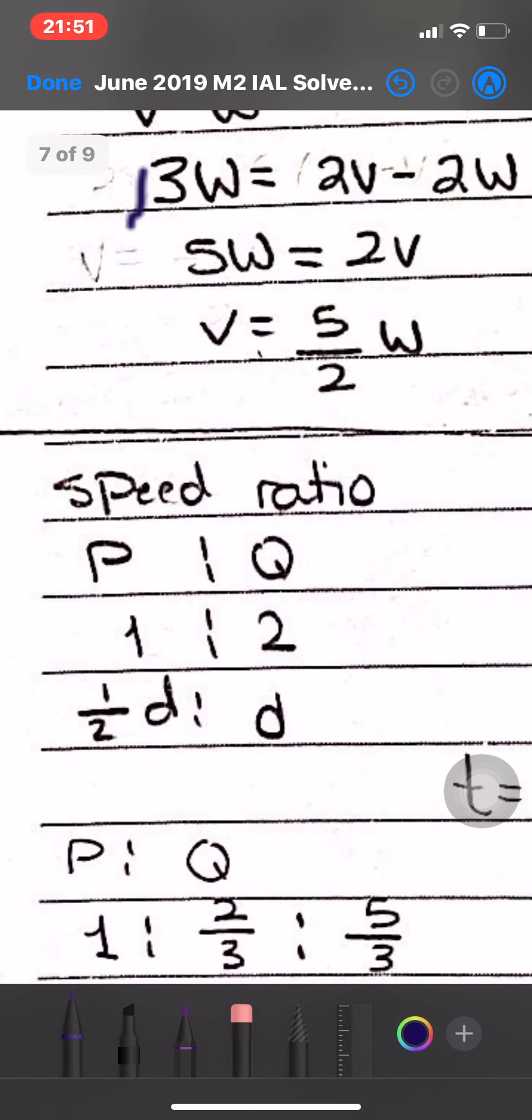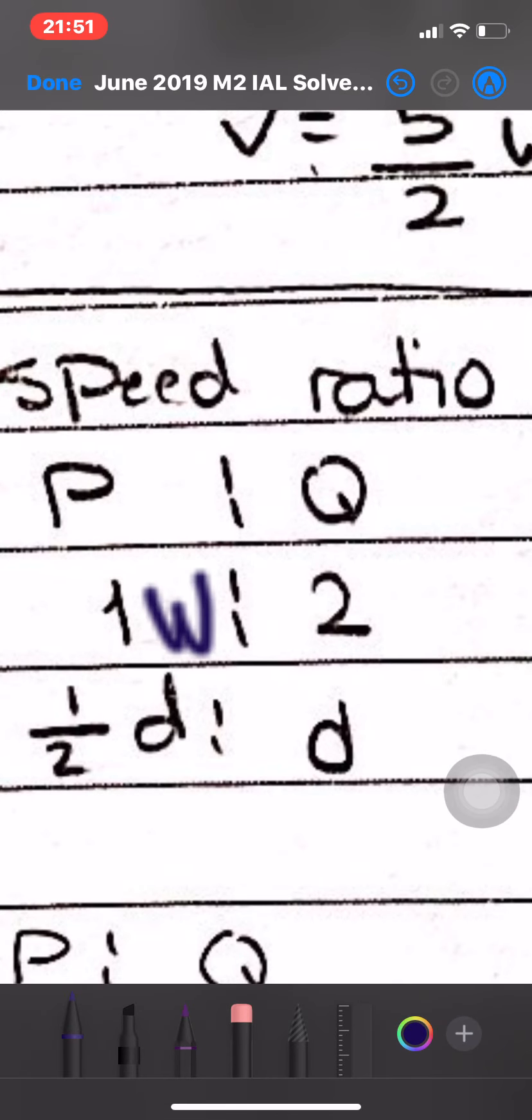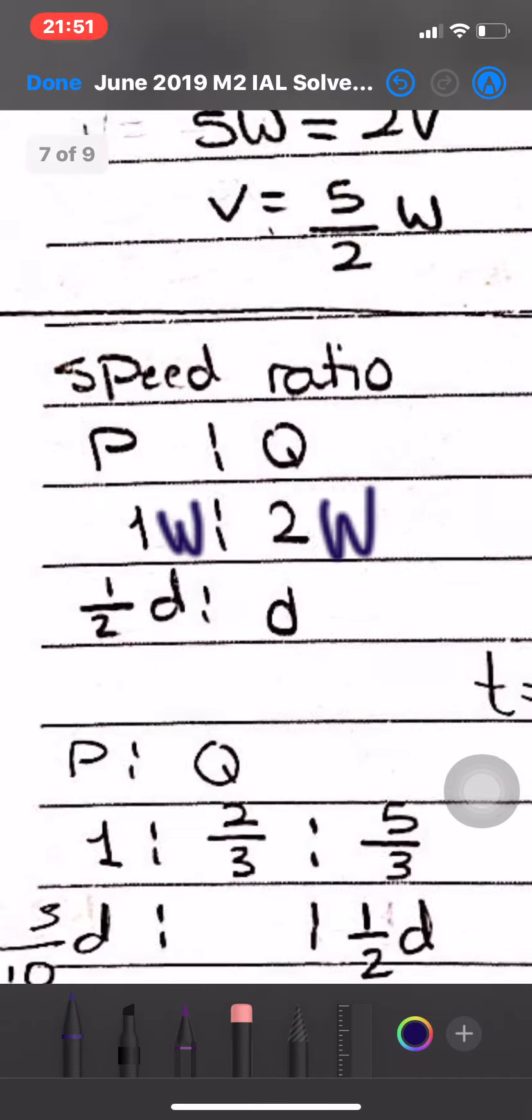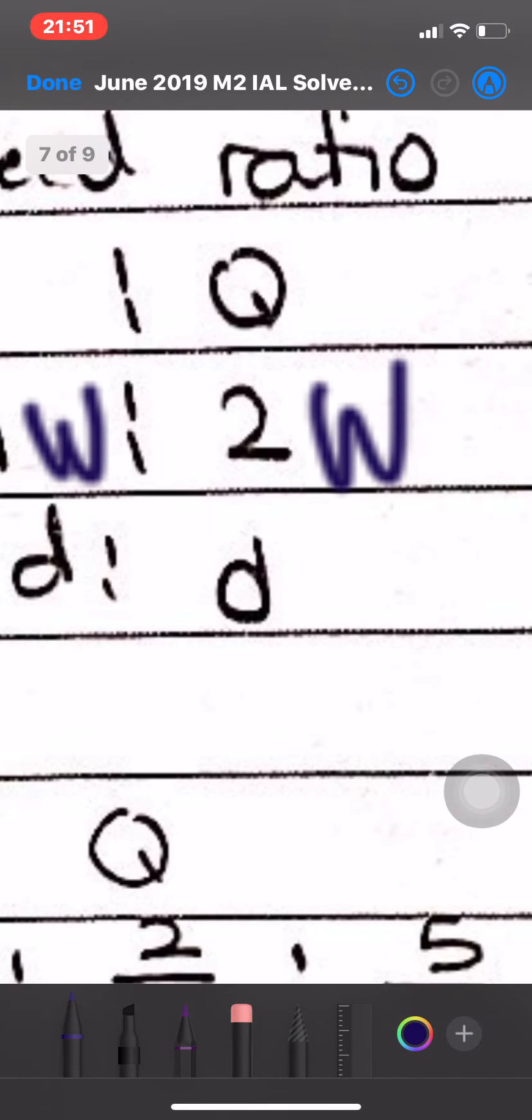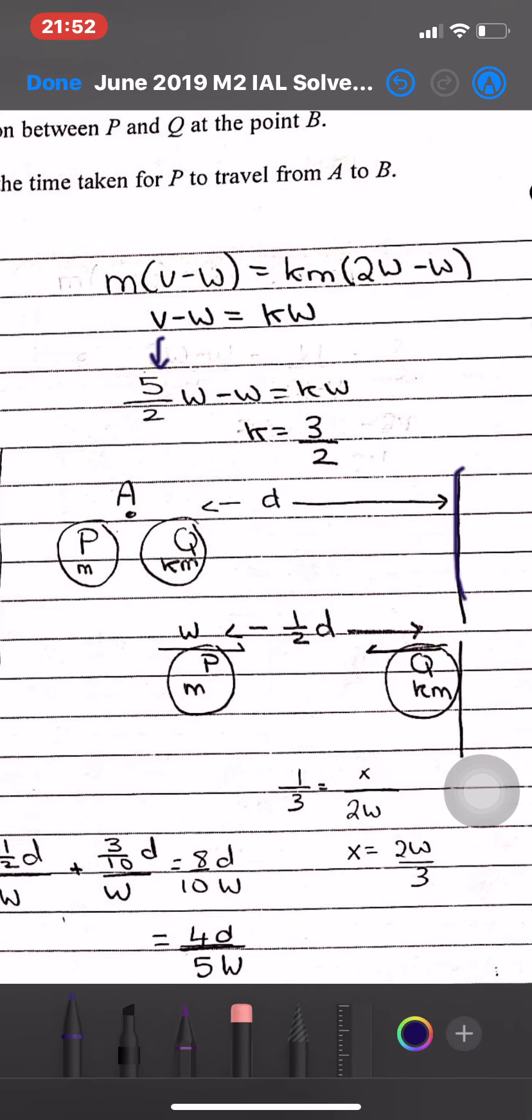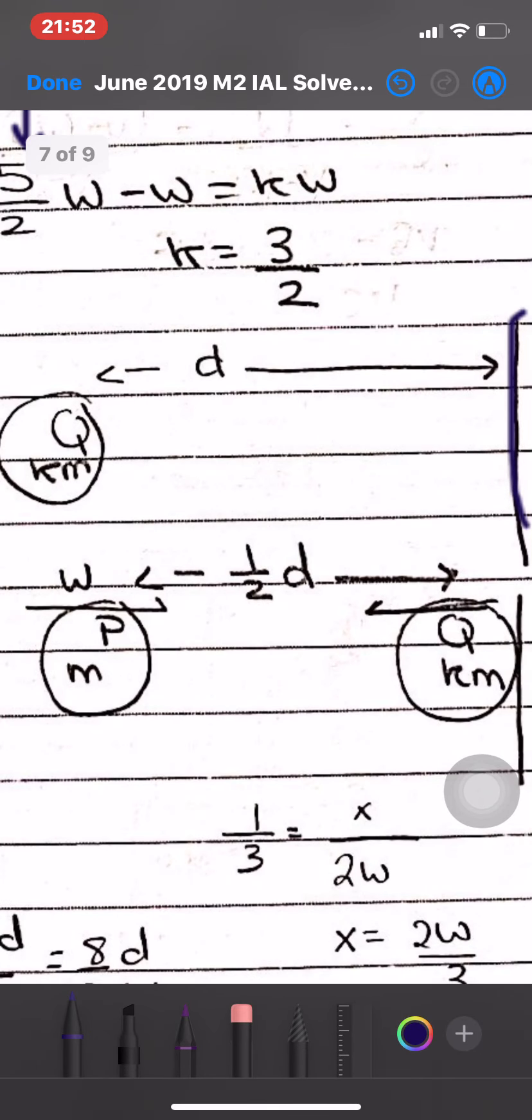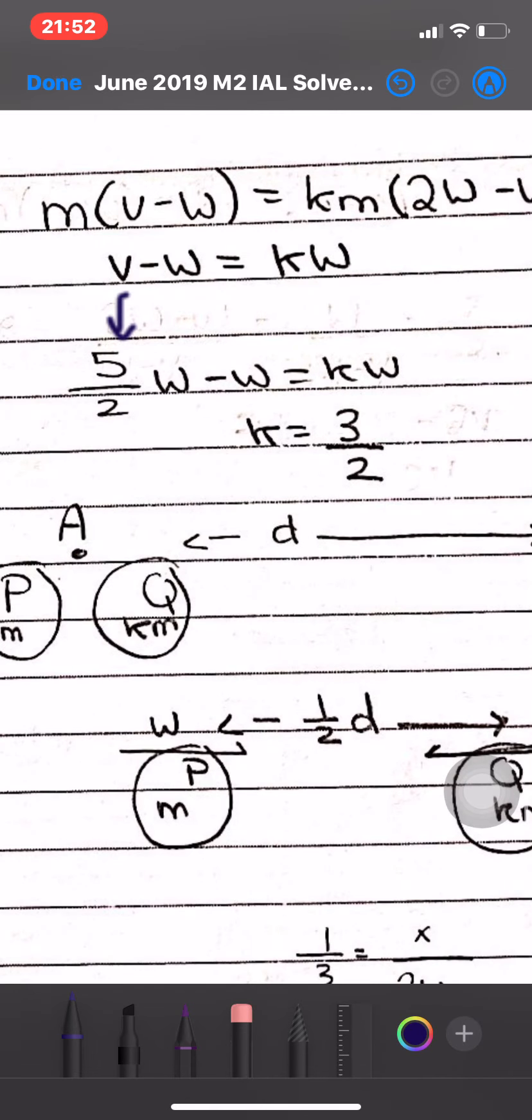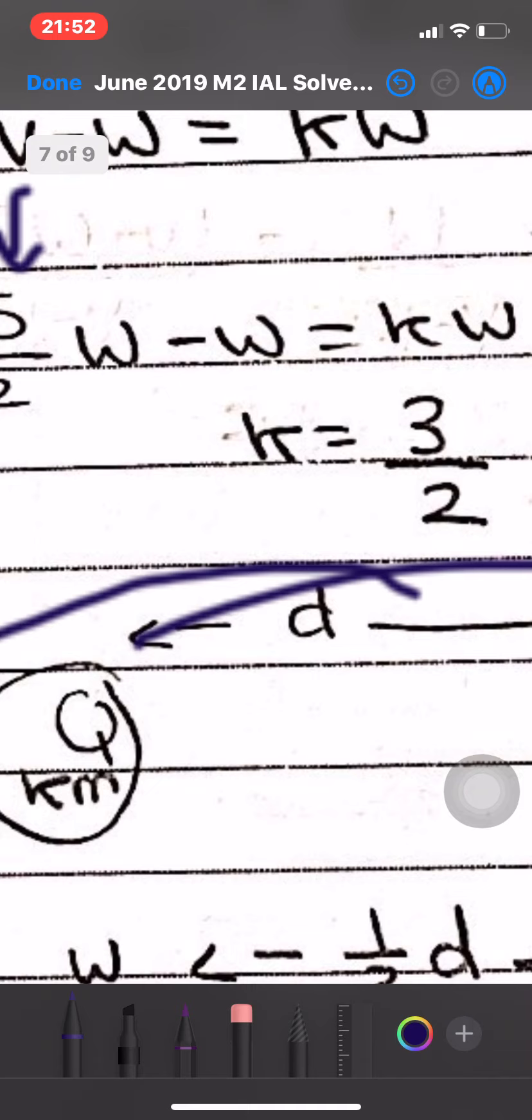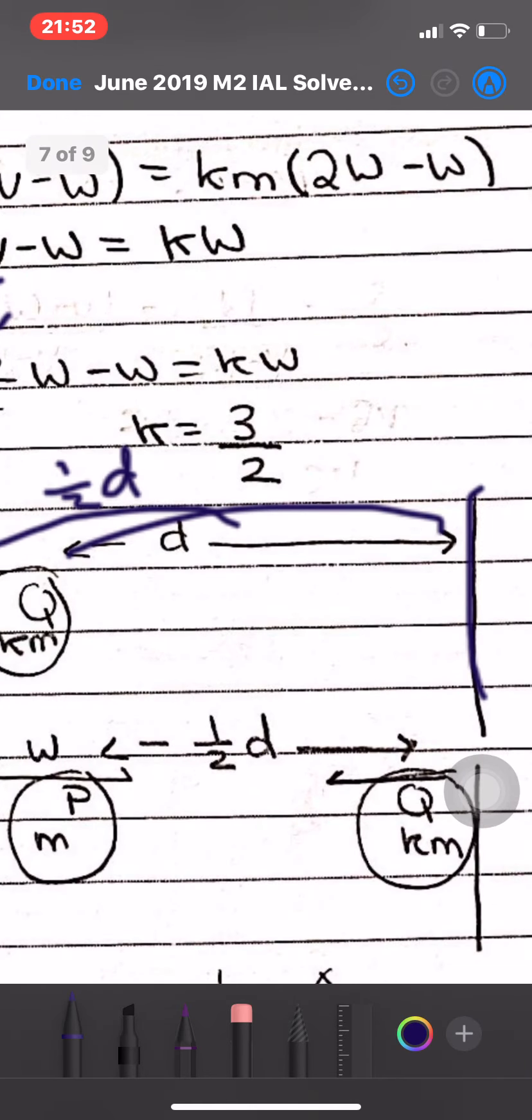The distance that P will travel - we have a speed ratio. P's speed is W, Q's speed is 2W. Using the ratio, if Q travels distance D, then P travels half D by cross multiplication. So the distance between them is D minus half D, which equals half D.